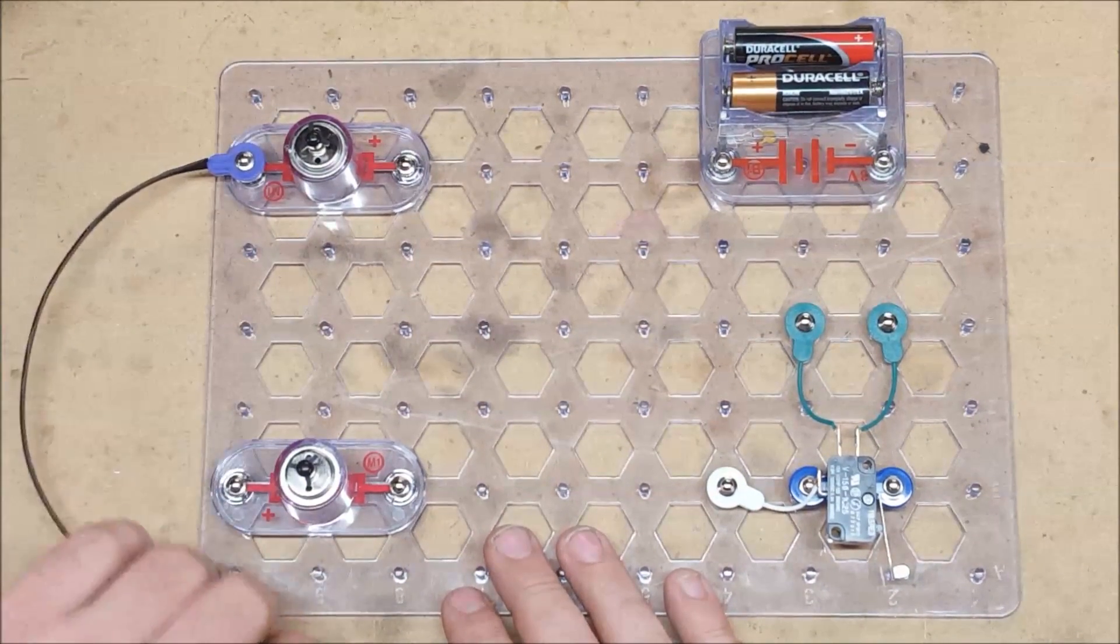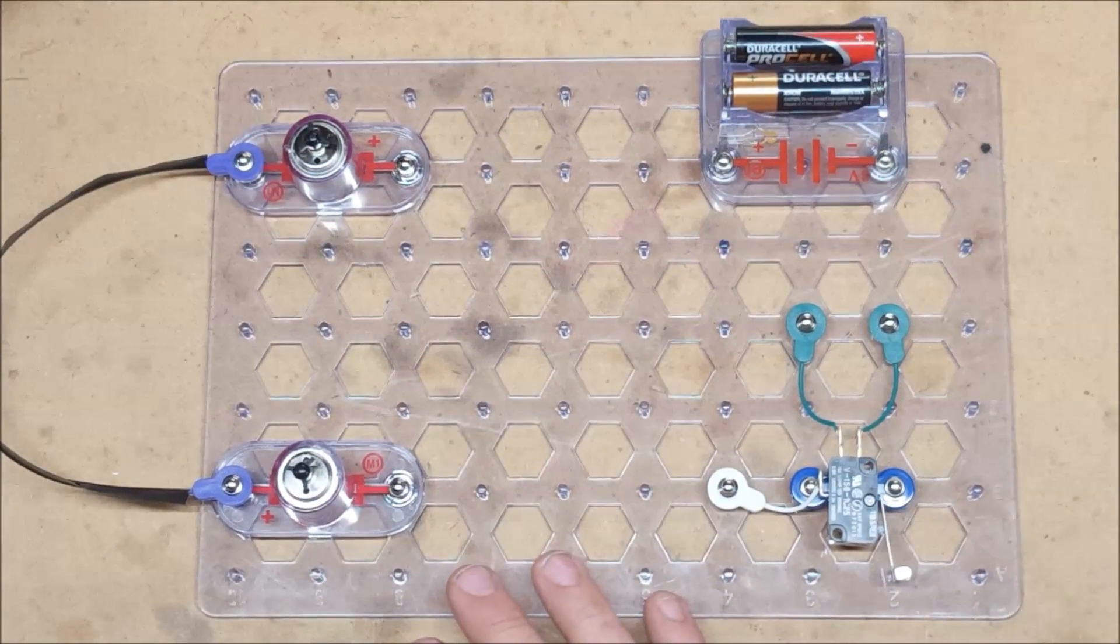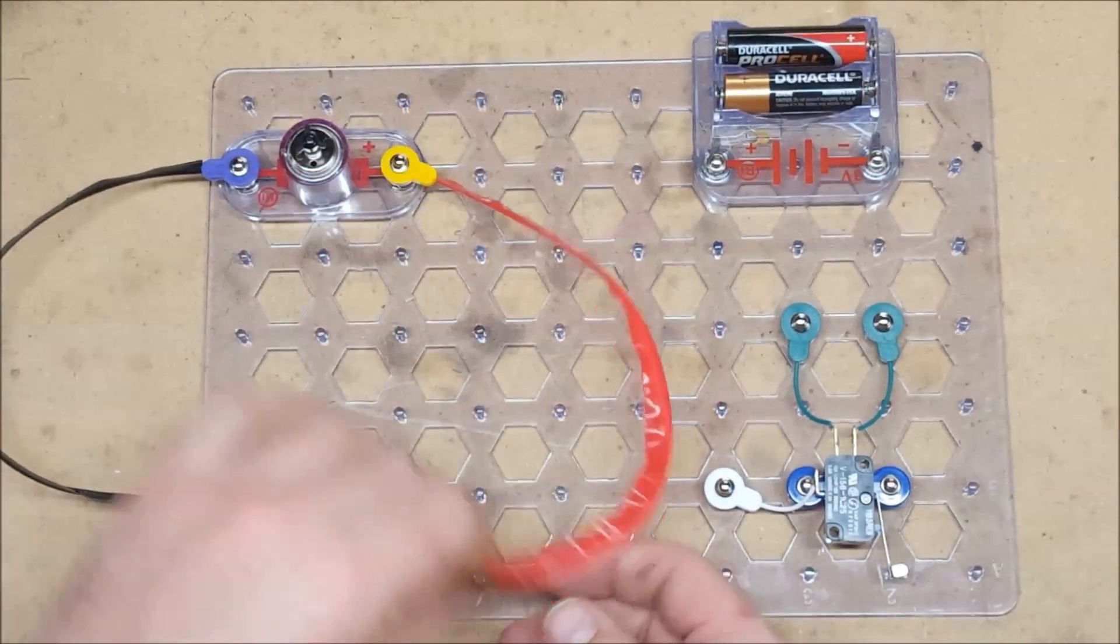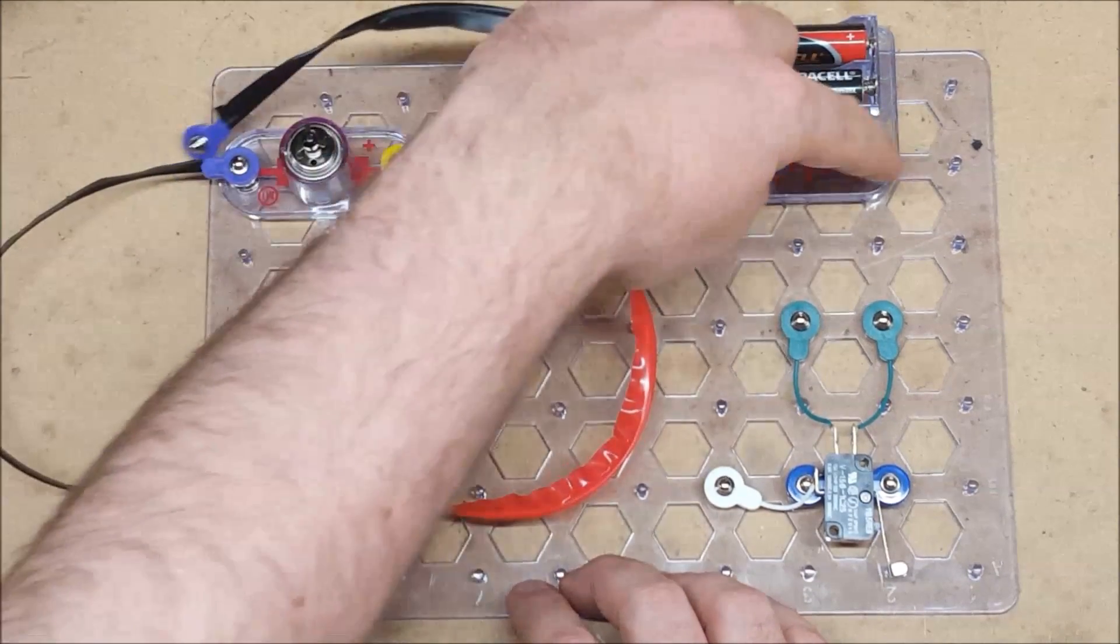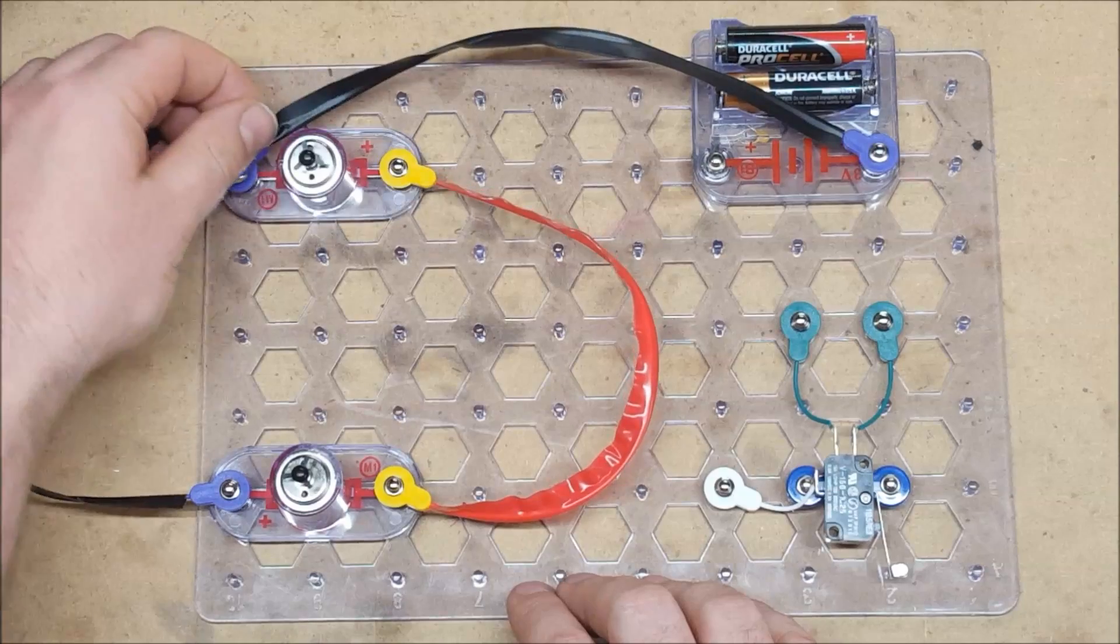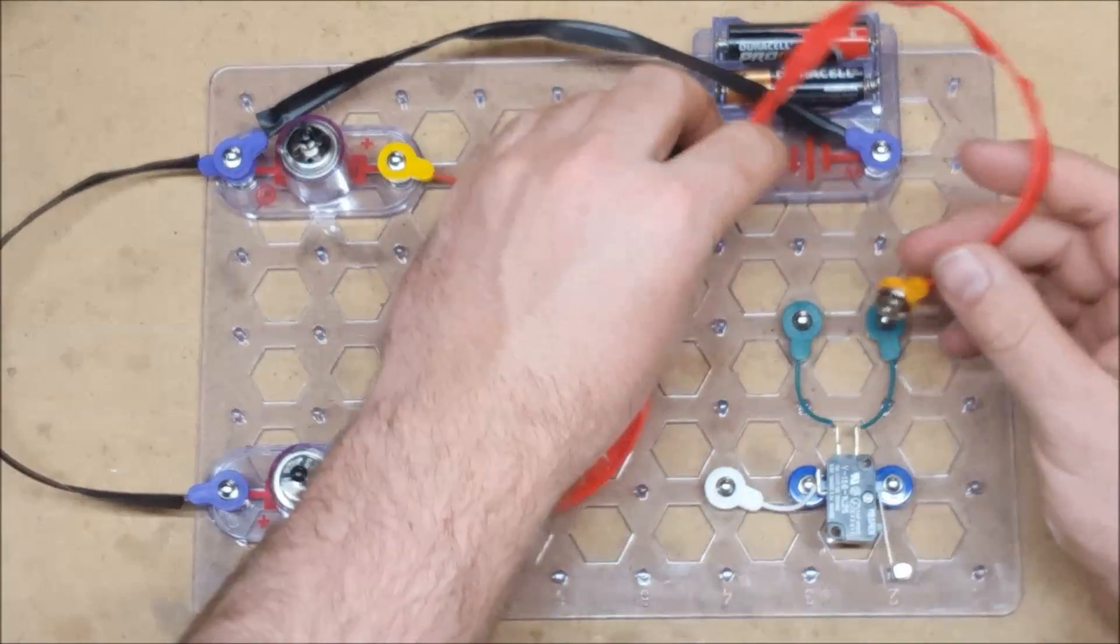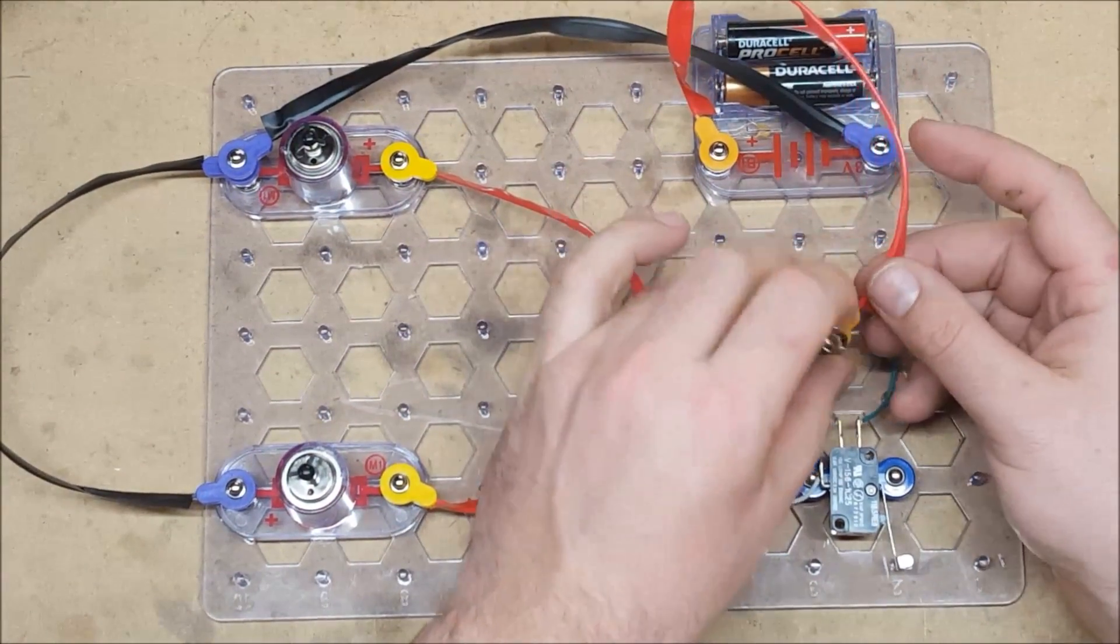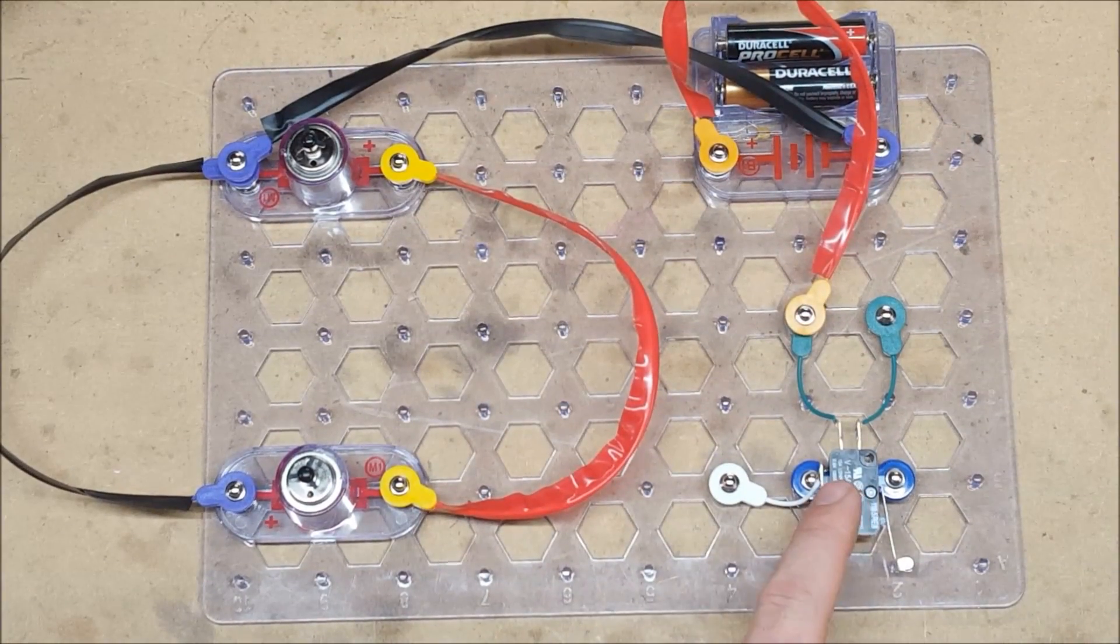We are going to connect the negative side together, and we are going to connect the positive side of the motors together. We are then going to connect the negative from the battery to the negative on the motors, and the positive on the battery to the normally open on our switch. And it will usually be labeled on the switch which one is normally open. It will be NO.